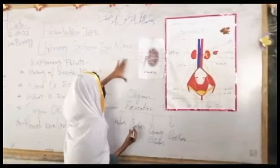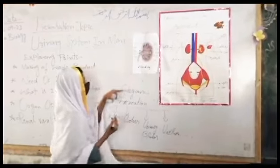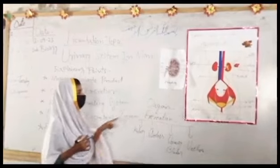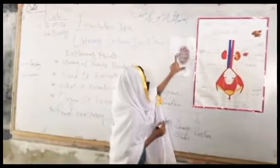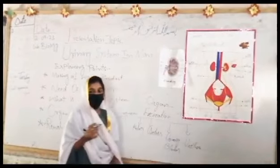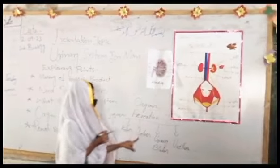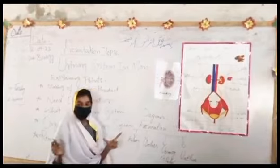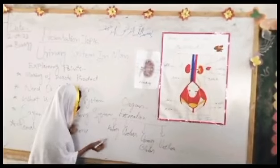It is a way of getting rid of waste from the kidneys. We have to keep our waste products from our compound, and we have to store all the kidneys. We have to use ureters. Ureters are the ones that are connected to our kidneys.